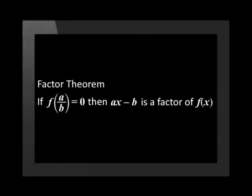The Factor Theorem states that if f of a divided by b equals 0, then ax minus b is a factor of f of x. This sounds a little confusing, but once you do it, you'll see it's not so bad. Let's do an example to help us understand it more.